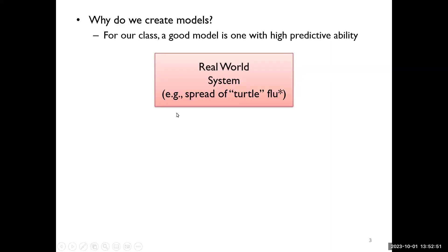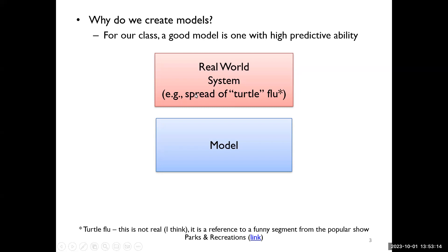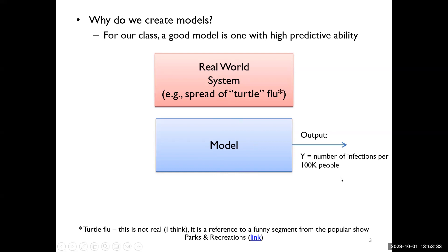Generally, a model is some kind of representation of a real-world system. Let's say in the real world we have the spread of the turtle flu — some kind of disease or virus spreading and affecting a human population. We can't easily test what's going to happen to the spread of the flu in the real world because you can't just start changing things and see the effects. So instead, we try to model what would happen using a mathematical model. We build a mathematical model of the real-world system, and then for our model we want to know a certain output — for example, we want to predict the number of infections per 100,000 people, or the infection rate.